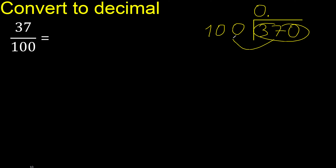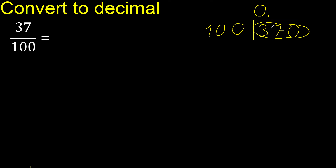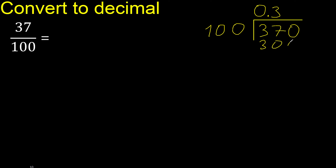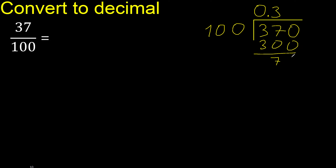It is not less. 100 multiplied by which number is nearest to 370 but not greater? Multiplied by 4 is 400 — 400 is greater. Multiplied by 3 is 300. OK, 300 is not greater. Subtract, leaving 70.